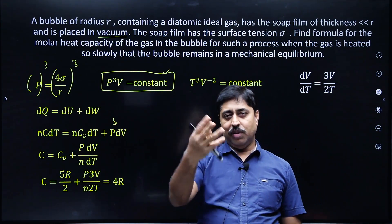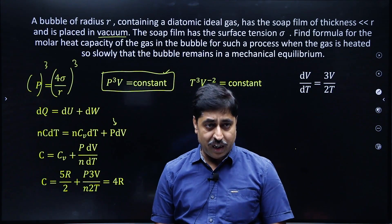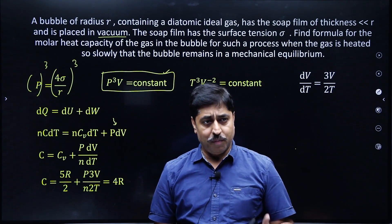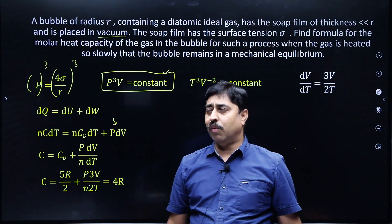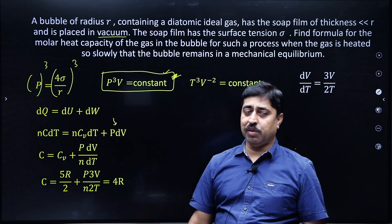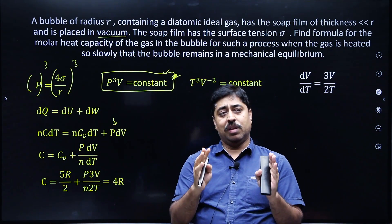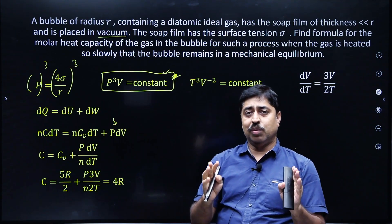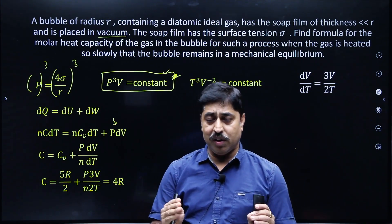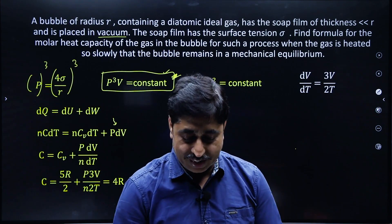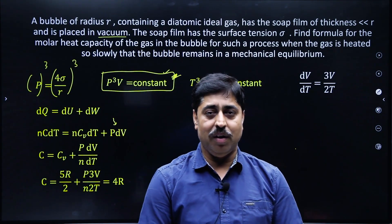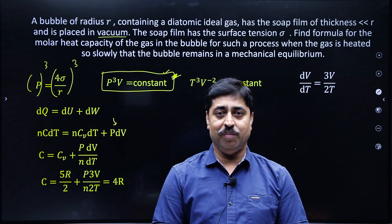You can use that formula directly to get the value of specific heat capacity, but the critical thing in this question was to obtain the process relationship P³V = constant. I hope you have understood this. See you in the next video with a new question and a new concept. Thank you.